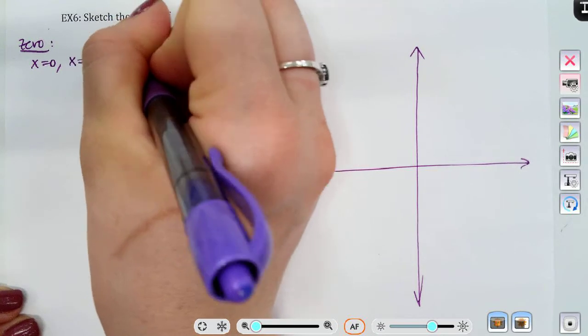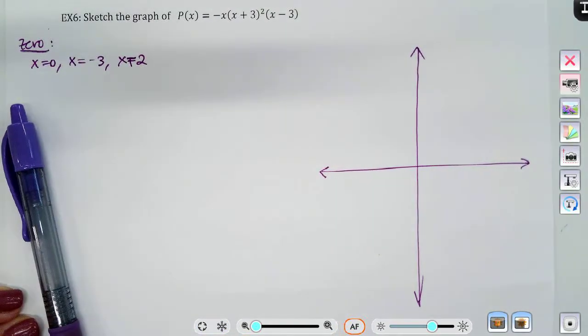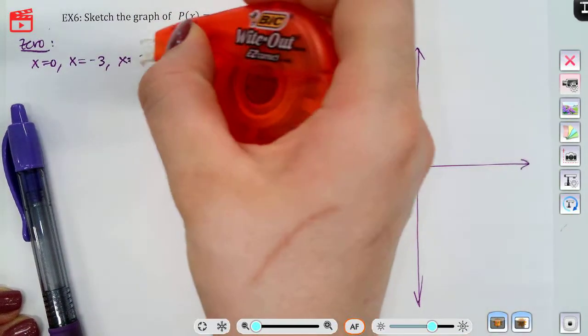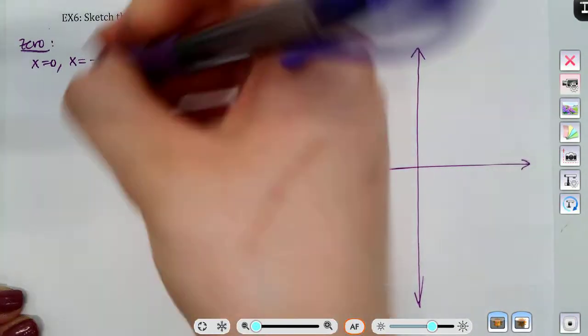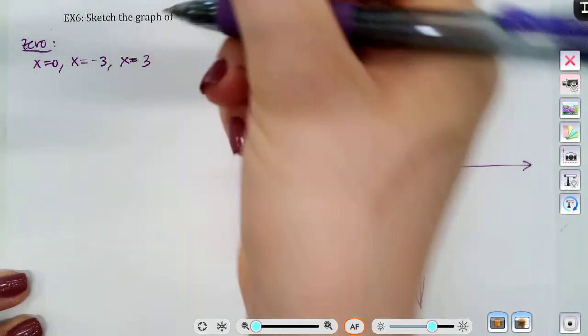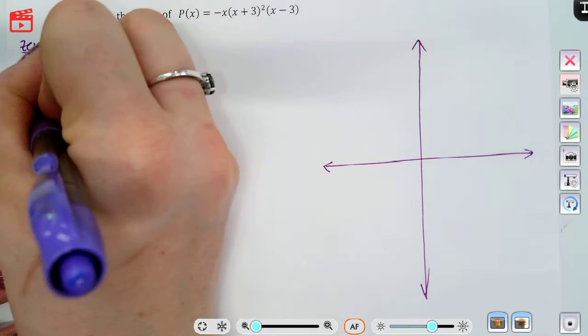Oop, x equals two, excuse me. And remember, we get those from setting each of our factors to zero and solving. Alright, and here we go, let's test points.